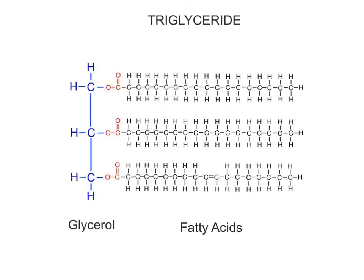Triglycerides are made up of two different types of chemical building blocks: a glycerol molecule and three fatty acids. Glycerol is a three-carbon sugar alcohol molecule that serves as the triglyceride's backbone. The three fatty acids are attached to each of glycerol's three carbon atoms through dehydration synthesis reactions.